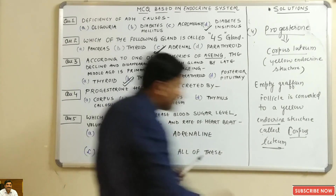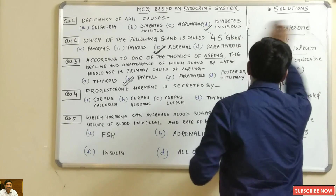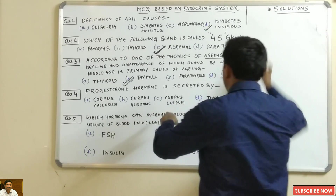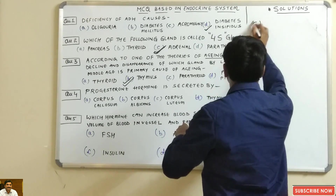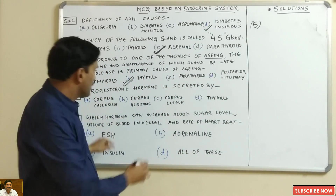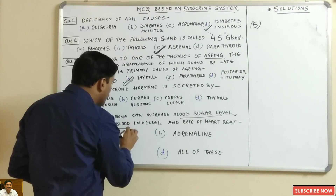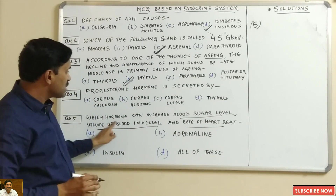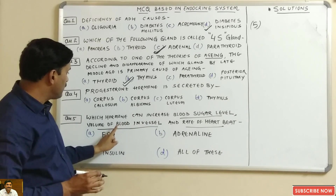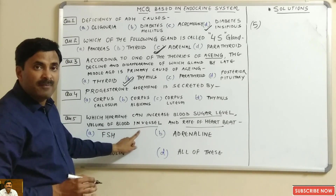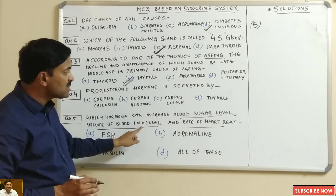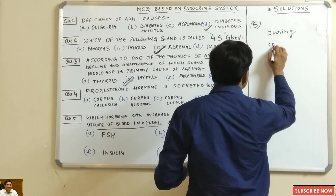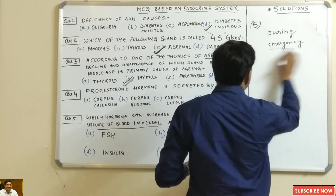Progesterone is also called the pregnancy-maintaining hormone — in its absence, abortion will occur in the mother. So progesterone is important for maintenance of the endometrium in the mother's uterus. The fifth question is: which hormone increases blood sugar level, volume of blood in blood vessels, and rate of heartbeat?